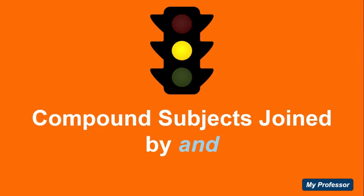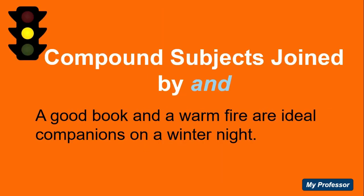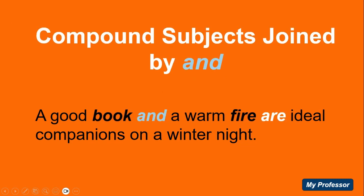Let's see what happens when we have compound subjects joined by the word AND. Example: 'A good book and a warm fire are ideal companions on a winter night.' Here we have a compound subject composed of two nouns — book and fire. Book and fire makes two, so we already have a plural, and the verb needs to make the agreement in the plural.